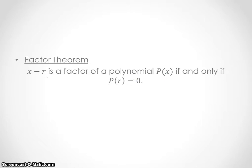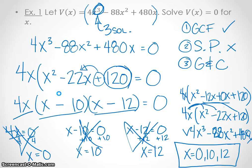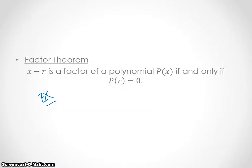So essentially, when you find what r is, so r is your solution, if you plug it back in, you should get P equaling 0. So I actually want to do a little example here for you of the example we just did. I'm going to go pull that polynomial, which is V(x) equals 4x cubed minus 88x squared plus 480x.